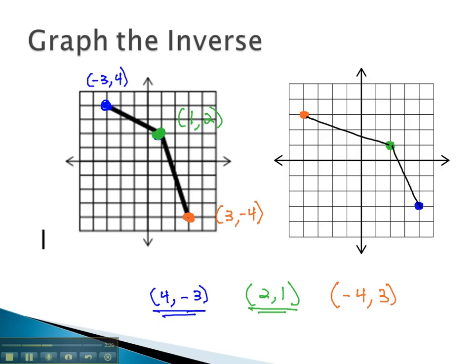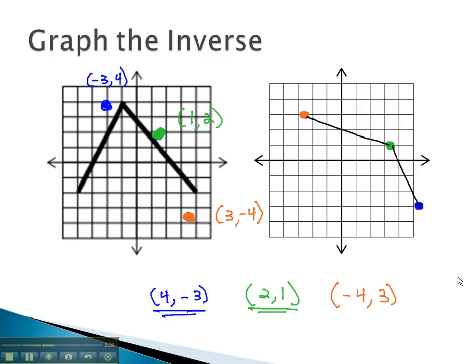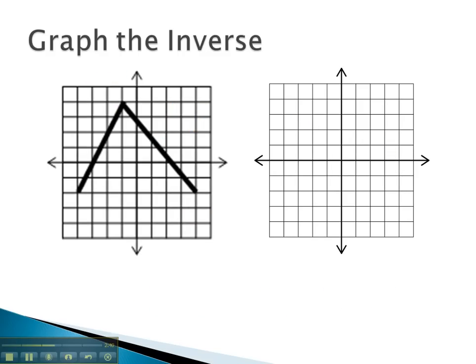Let's take a look at another example, where we find the inverse graph by identifying key points and switching the order of the coordinates. Again, we might start by doing the point on the far left.